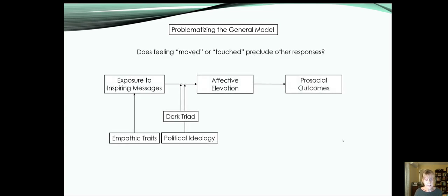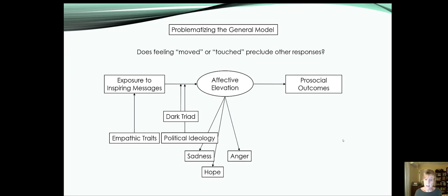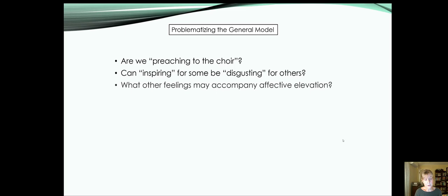Another question that I have is, does feeling moved or feeling touched preclude other responses that people might feel simultaneously? And so when we've been measuring elevation, we've noted that there are additional, it's a complex emotion. And things like sadness or hope might be right there. So I've kind of made affective elevation a latent variable here to try to illustrate that. But I also wonder if there are additional responses that may be out there that we just haven't assessed yet. So for example, anger or even moral outrage. So the third question is, what other feelings might accompany affective elevation?